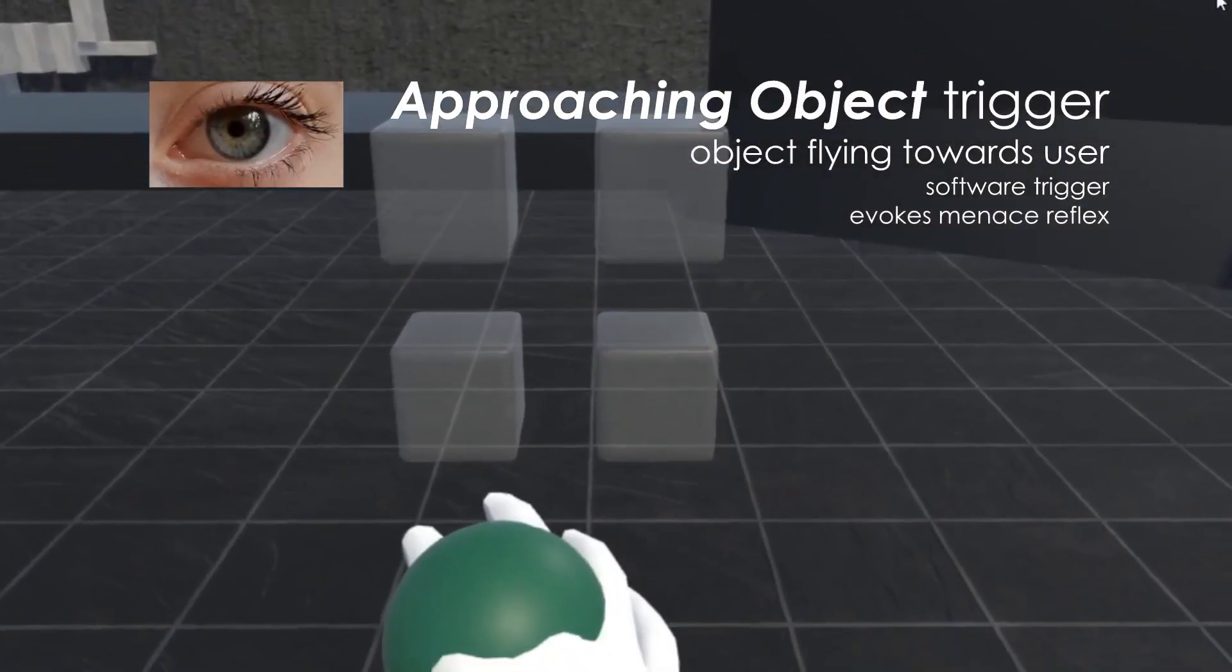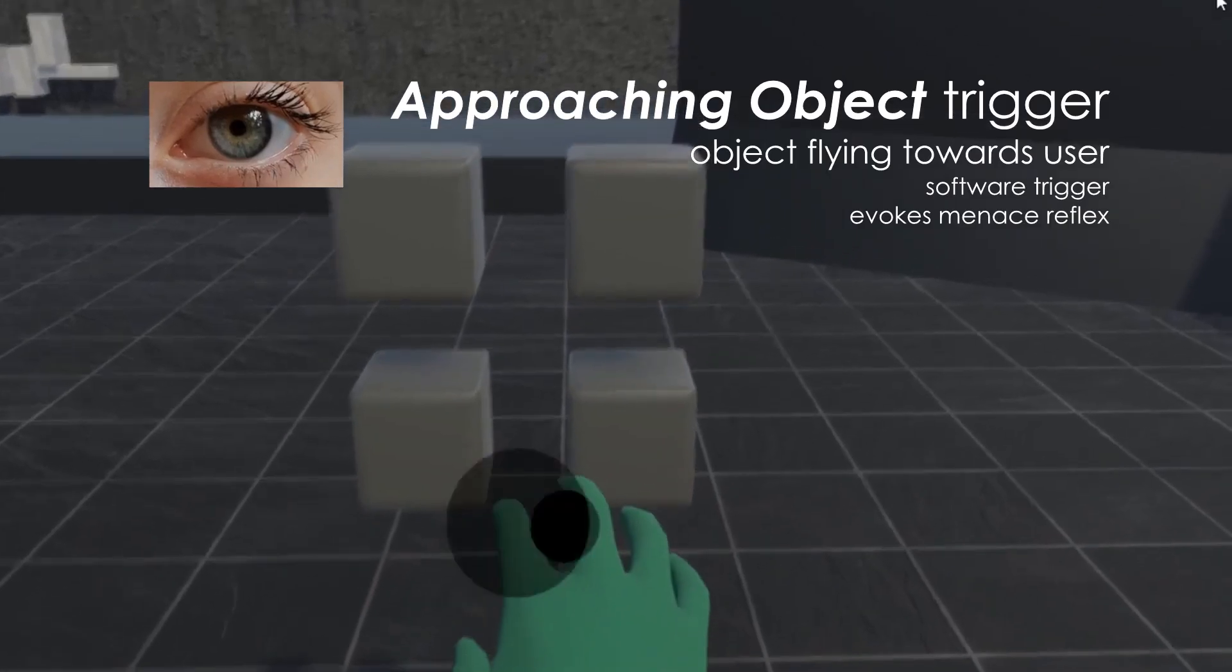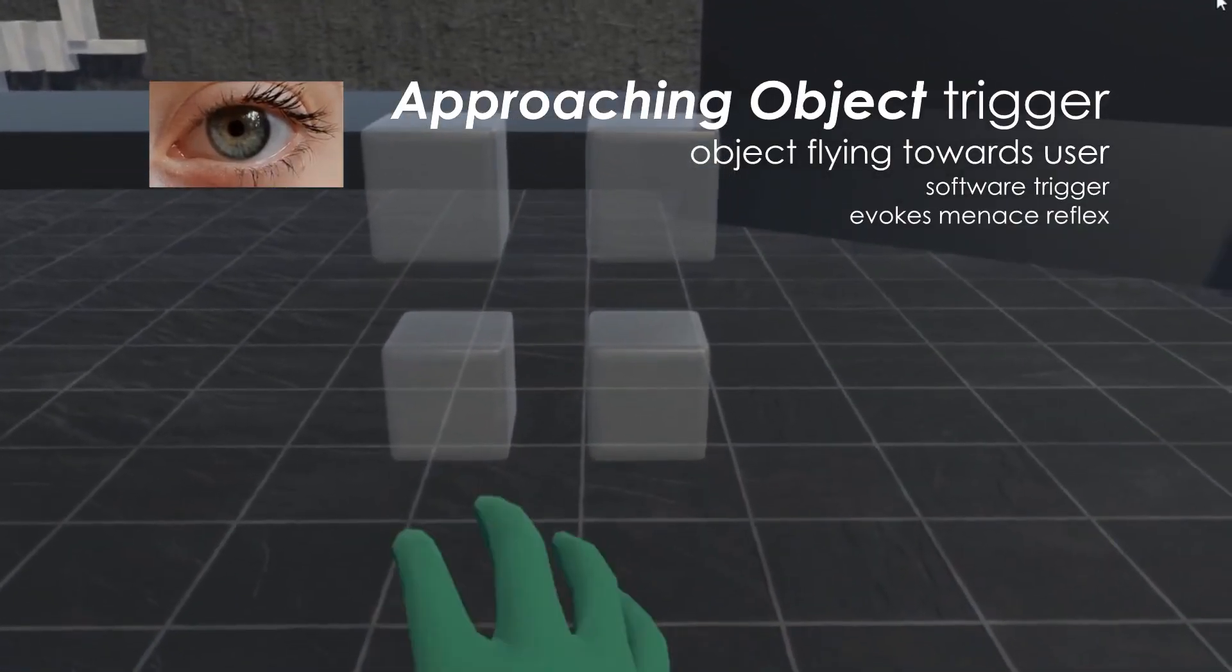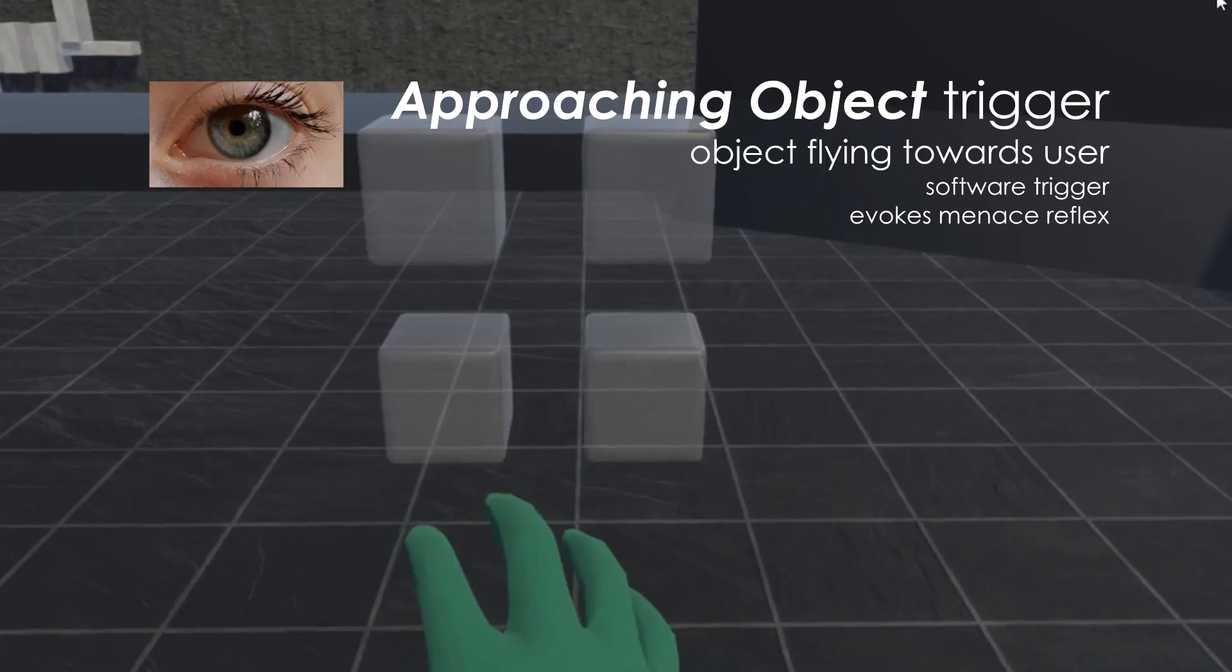Thirdly, we proposed a novel software-based trigger method called the Approaching Object Trigger, which is unique to virtual reality. This method targets the Menace Reflex and renders a small black sphere that rapidly approaches the user's face in order to trigger a protective closing of the eyelids.